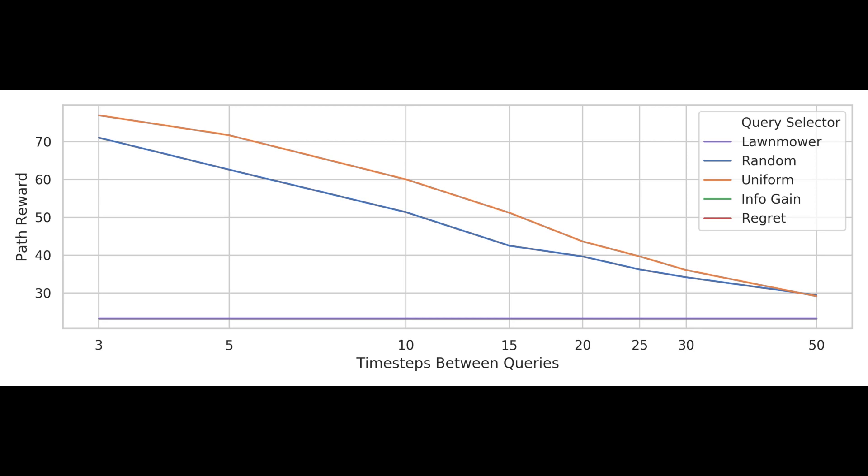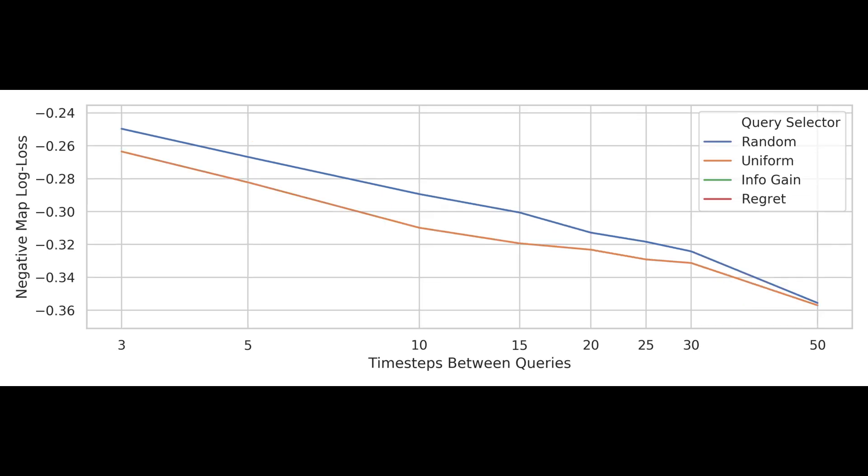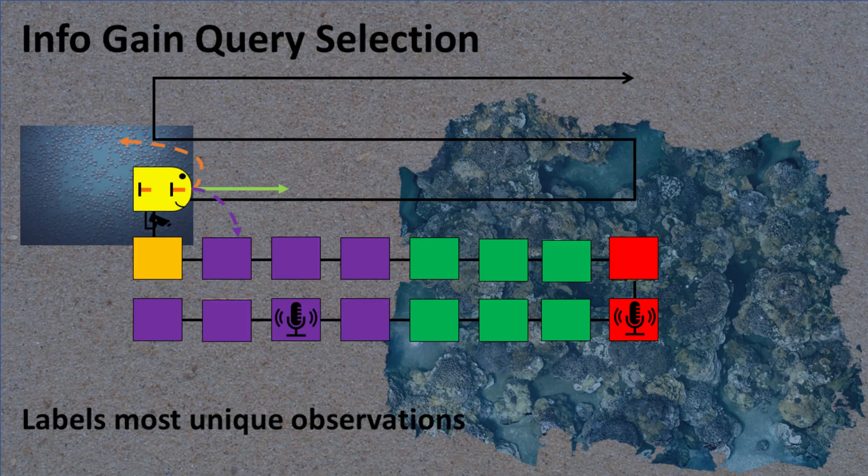The exceptions are when the bandwidth is very high, thus allowing the robot to get almost every observation labeled, or so low that hardly any observations get labeled, regardless of the approach.